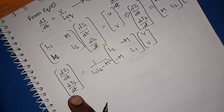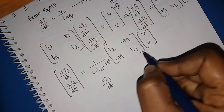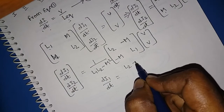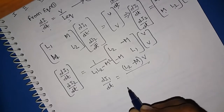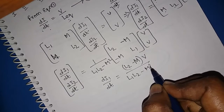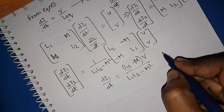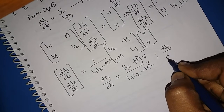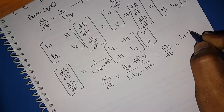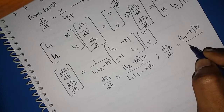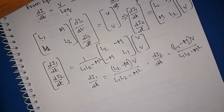Therefore: dI1/dt = (L2 − M) × V / (L1·L2 − M²), and dI2/dt = (L1 − M) × V / (L1·L2 − M²). These are equations 6.